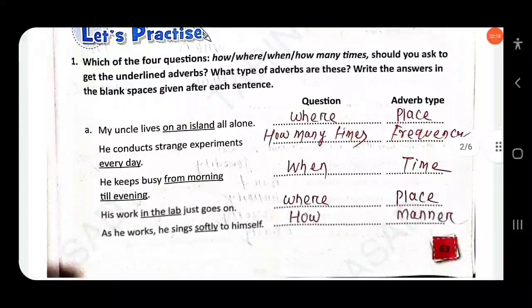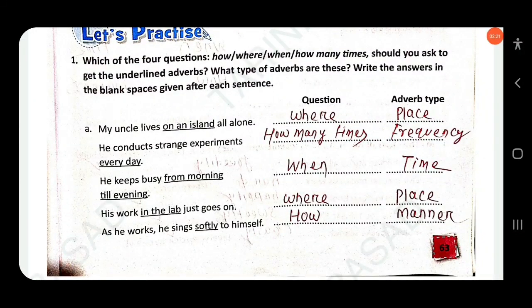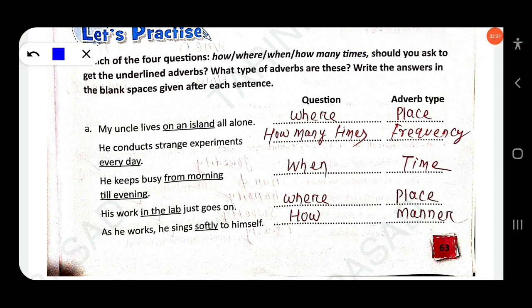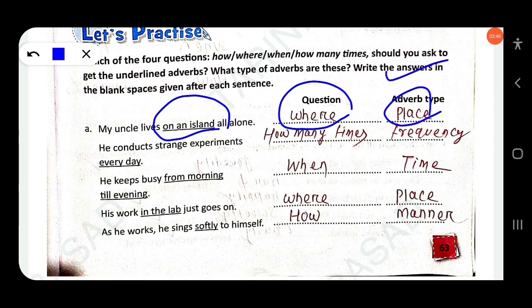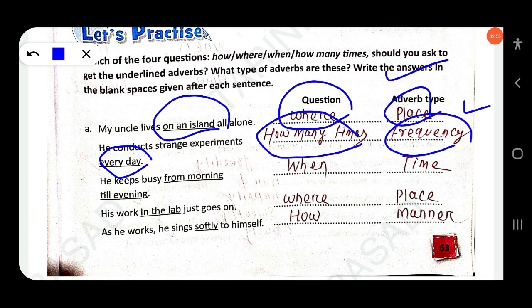Now for the exercise: ask one of the four questions — how, where, when, how many times — to identify the type of adverb. 'My uncle lives on an island all alone' — 'on an island' is adverb of place (where). 'He conducts strange experiments every day' — 'every day' is adverb of frequency (how often). 'He keeps busy from morning till evening' — adverb of time (when).